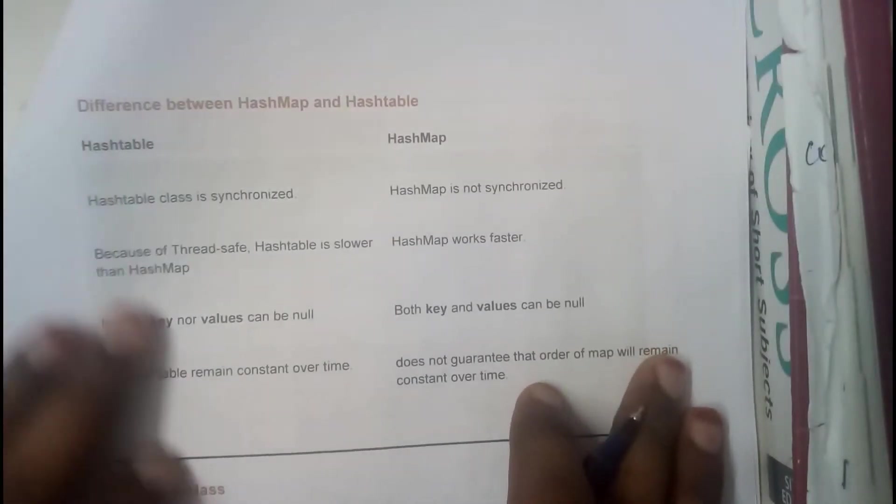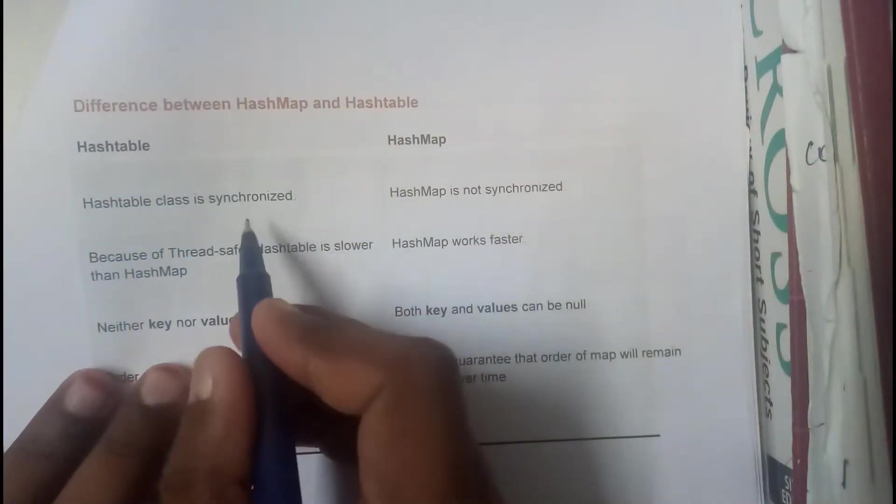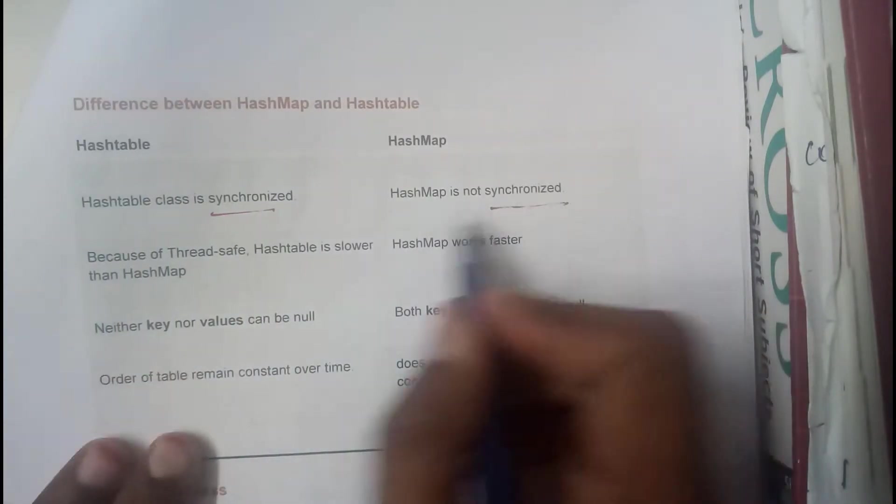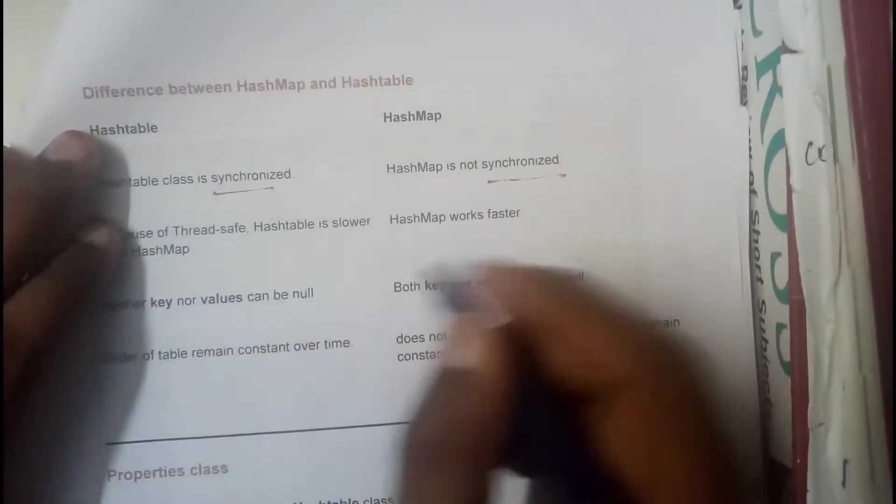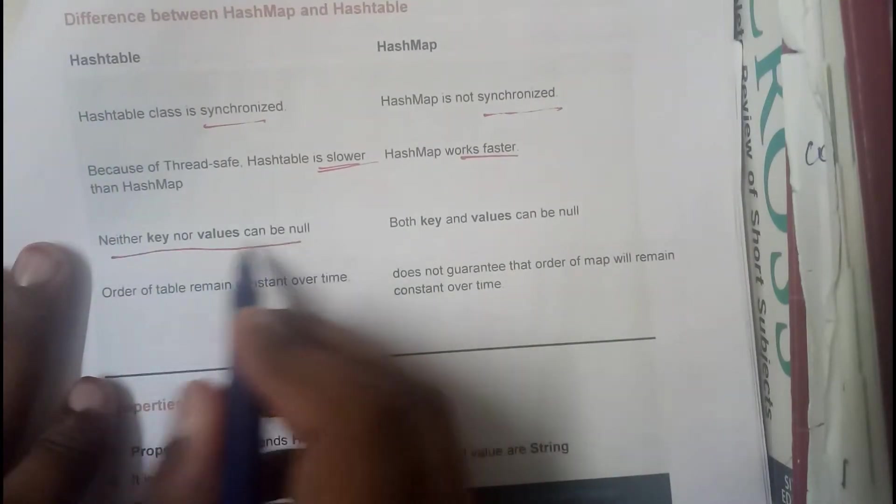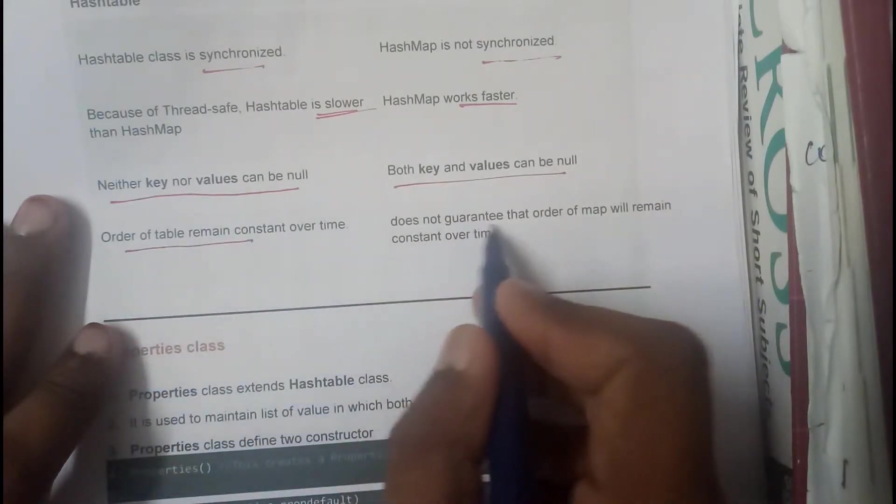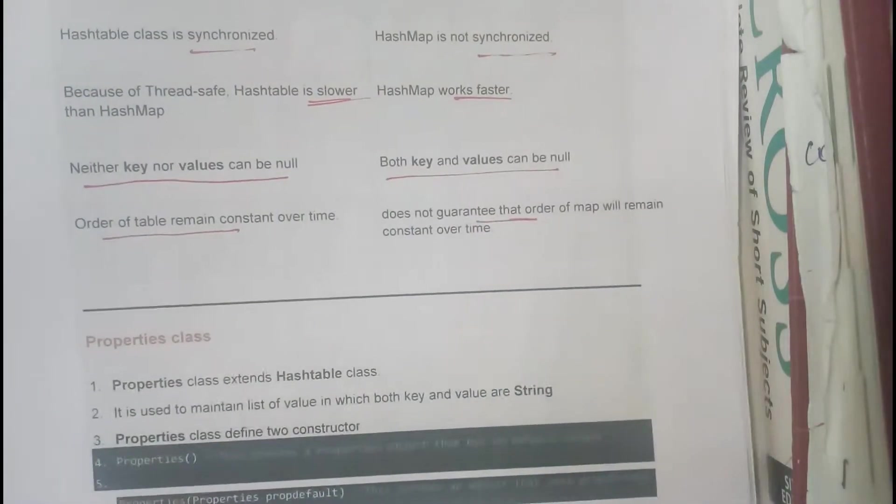Now let us go through the small differences between hash table and hash map. Synchronized vs not synchronized. It works slower vs works really fast. Neither key nor values should be zero vs they can be zero here. Order of the table is not considered vs it is considered here.